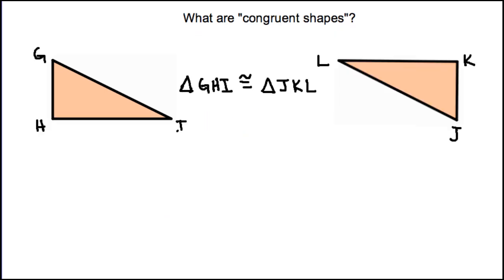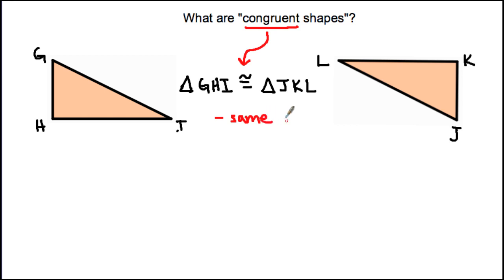The second part of this video explores congruent shapes. We have triangle GHI and the congruency symbol — which is the squiggle with an equals sign — followed by triangle JKL. Congruency means the shapes have the same shape just like similarity, but also the same size. So all angles are identical and all side lengths are equal.